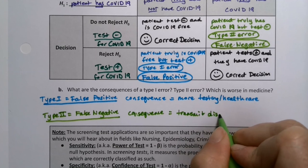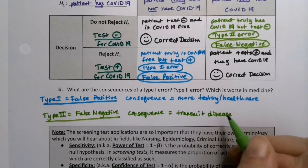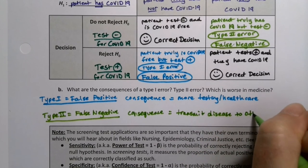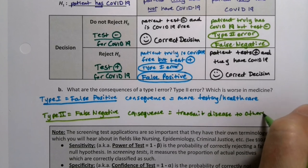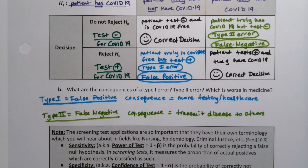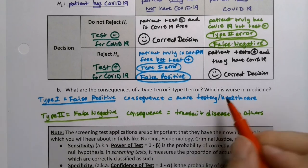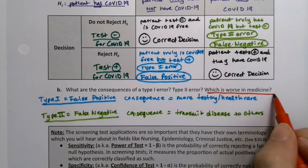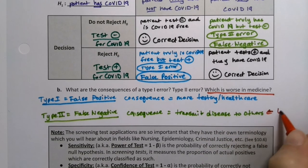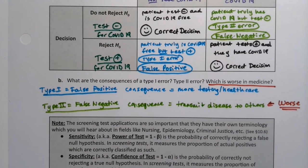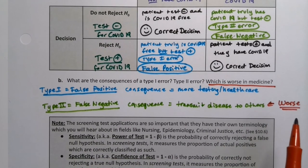Which is worse? Obviously the false negative. Unlike the criminal justice system where reasonable people can argue, here there's no question — the false negative is far worse, especially for a communicable disease, because you're transmitting that disease to others. And that's really bad.